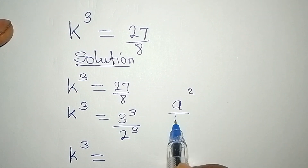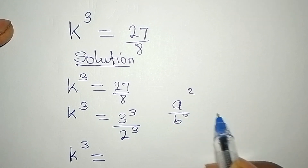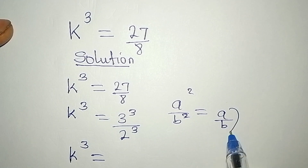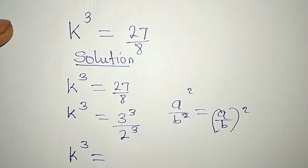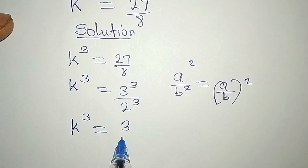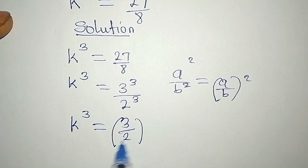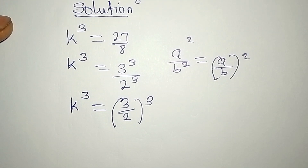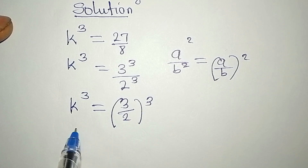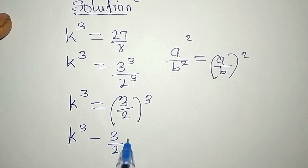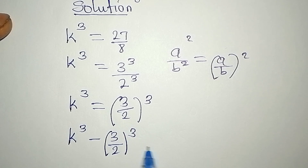Now k³ equals — I can combine this. If you have a² over b², this is the same thing as (a/b)². Applying the same rule, we get (3/2)³. Now taking the right side to the left, k³ minus (3/2)³ equals 0.